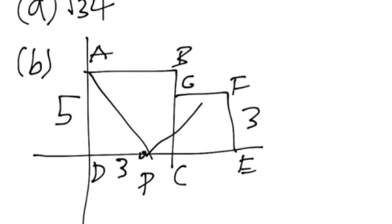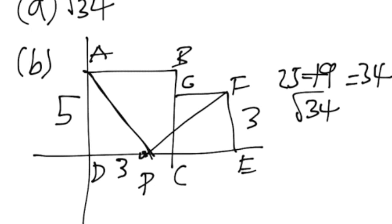So when we draw the sides in, we know that we are going to be using the Pythagorean theorem. So to find this length, all we have to do is add 25 plus 9, which equals 34. And we take the square root of that. And we know that's our length.